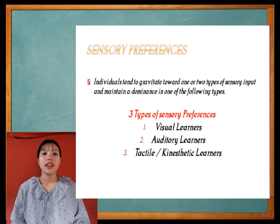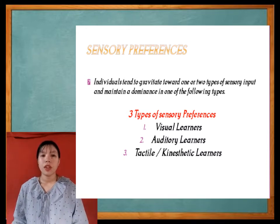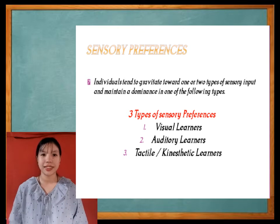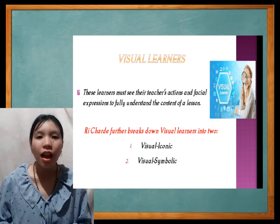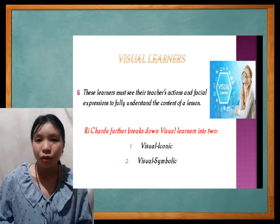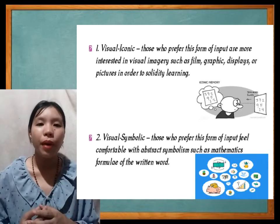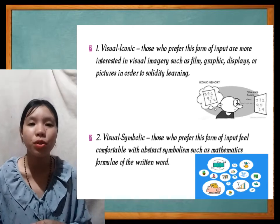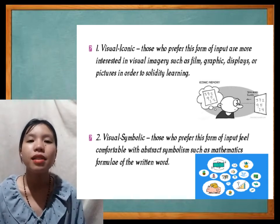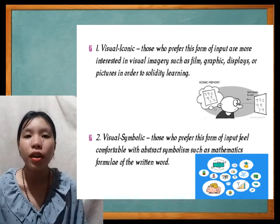Sensory preferences: individuals tend to gravitate toward types of sensory input and maintain a dominance in one of the following types. There are three types: visual learners, auditory learners, and tactile or kinesthetic learners. Visual learners must see their teacher's actions and facial expressions to fully understand the content of a lesson. Reid further breaks down visual learners into visual iconic — those interested in visual imagery such as film, graphics, displays, or pictures — and visual symbolic — those who feel comfortable with abstract symbolism such as mathematical formulae or the written word.